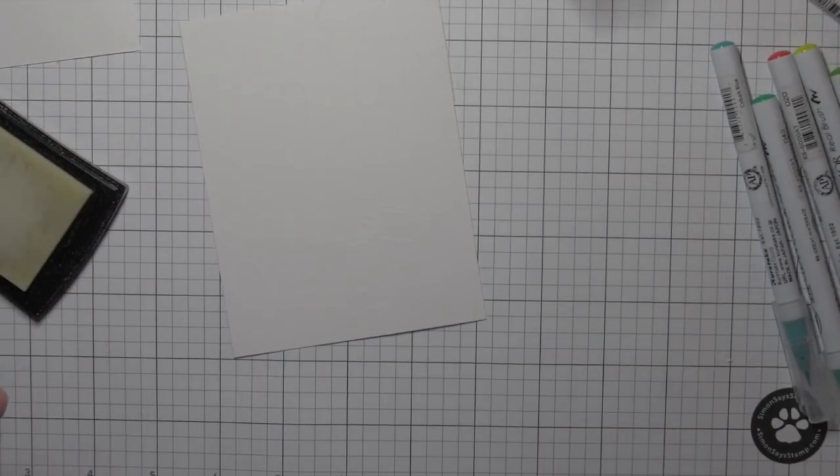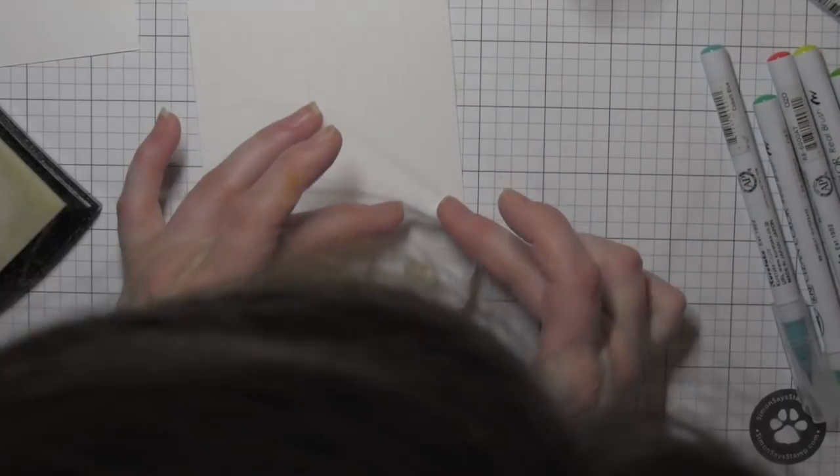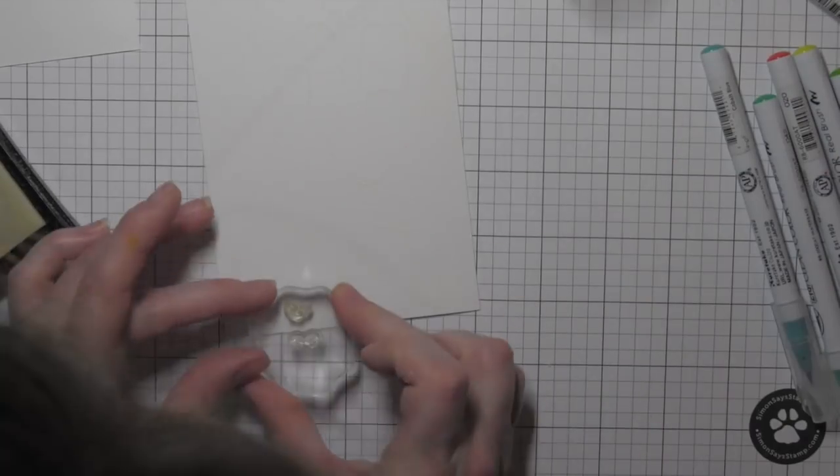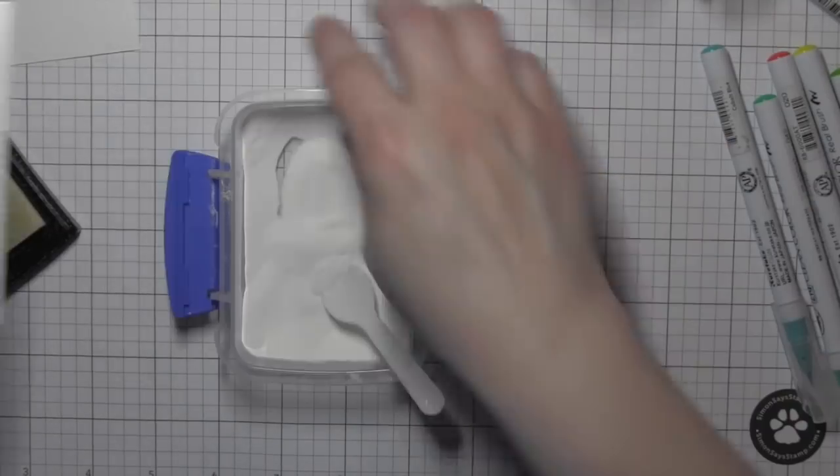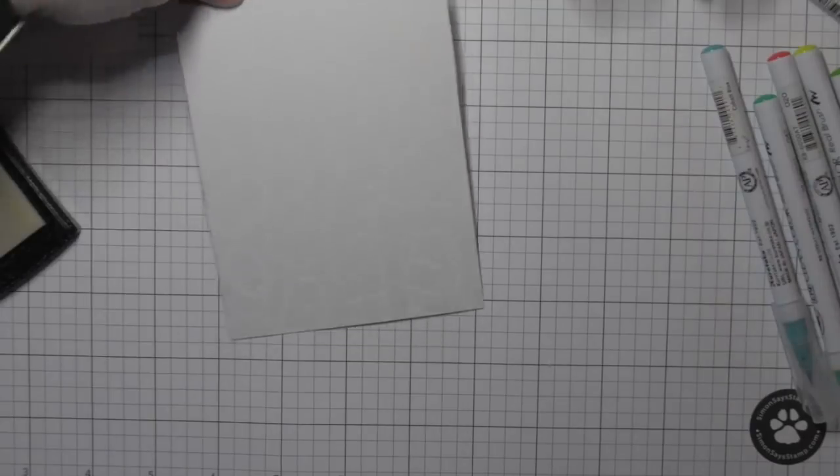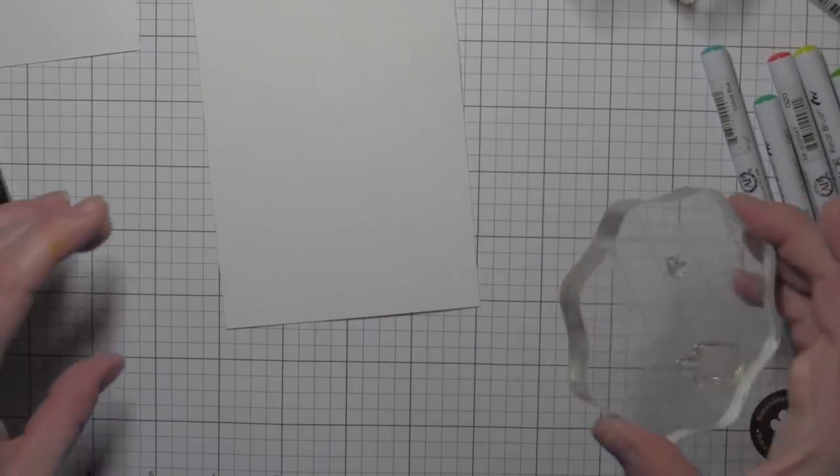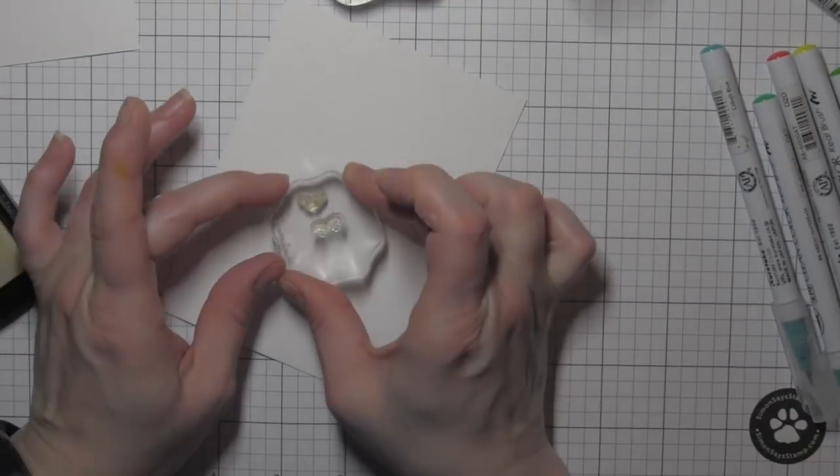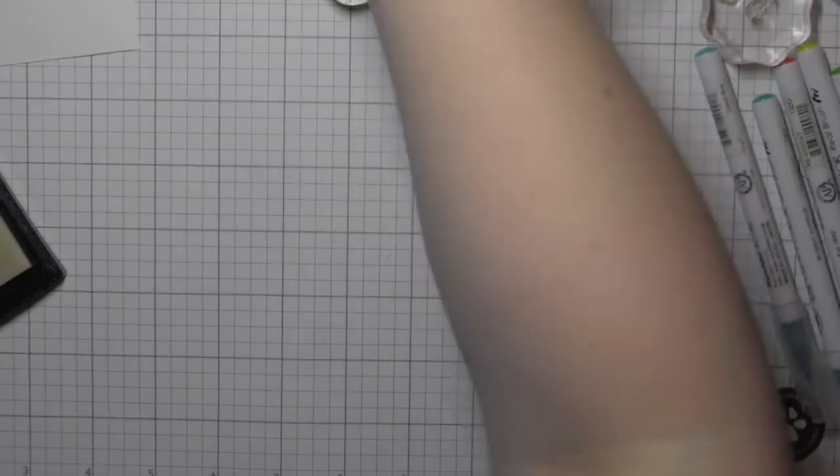So once I completely get my popsicles stamped and add the embossing powder, I'm not going to heat set it yet. I'm going to take the faces from Best Pun Ever and fill in the popsicle shapes with the embossing powder so that all of the popsicles have a cute little face.